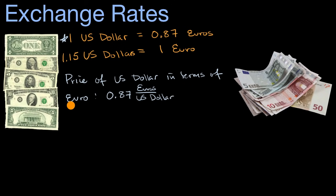If you were to go the other way around, if you wanted the price of the euro in terms of the US dollar, that would be the other way around. One euro would cost a dollar 15 cents. So this would be 1.15 US dollars per euro.